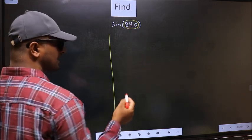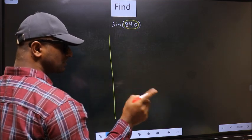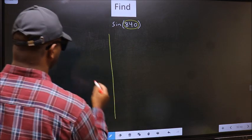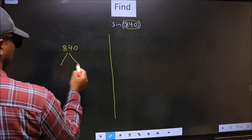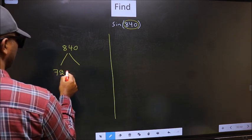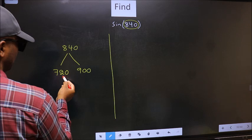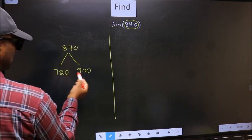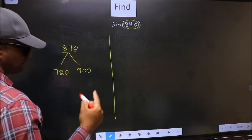Now you should check: 840 lies between which two multiples of 180? What I mean is, 840 lies between 720 and 900. This is 180 into 4 and this is 180 into 5. Between these two numbers, 840 lies.